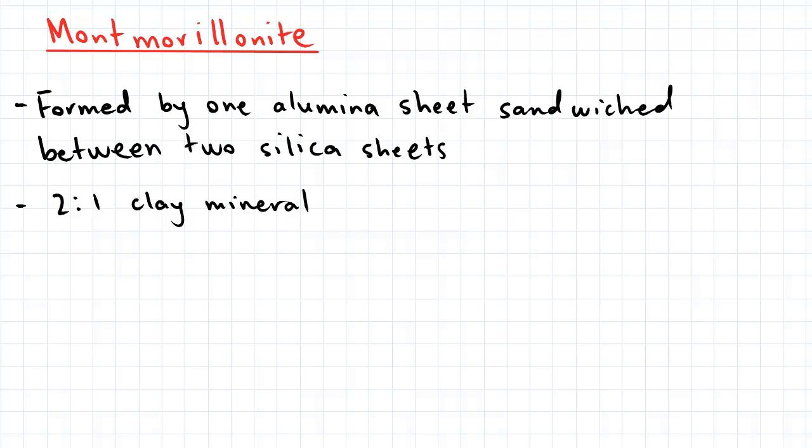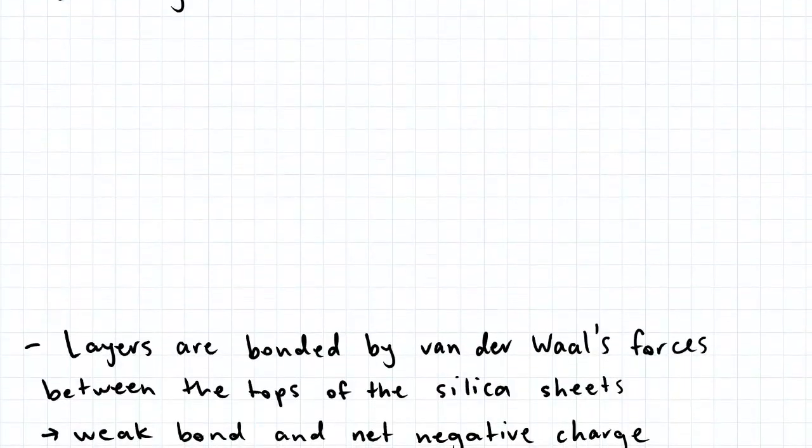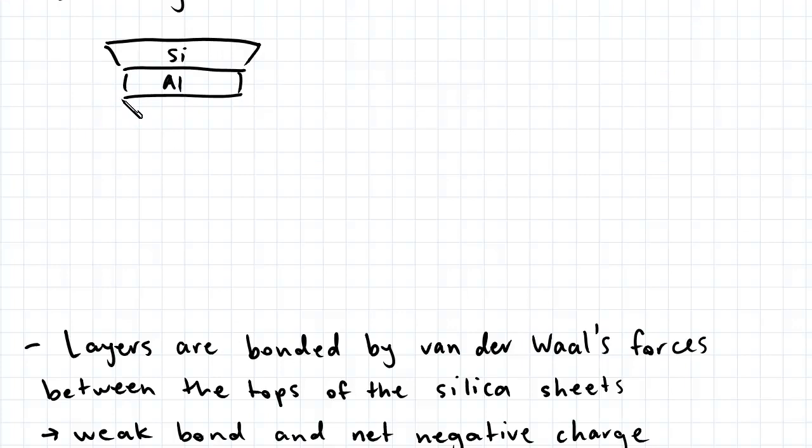And this is what the mineral looks like in a diagram. So if I was to draw one layer here, we have silica, alumina, and another silica layer. And this pattern essentially repeats itself.